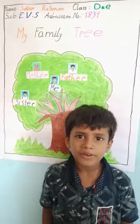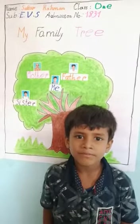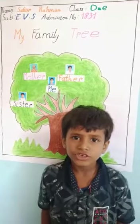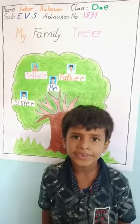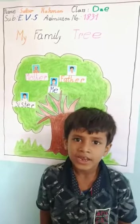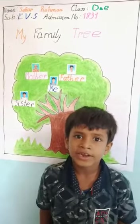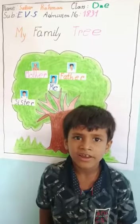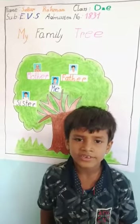A joint family is a big family consisting of parents, grandparents and their children, uncle, aunt, and cousin.